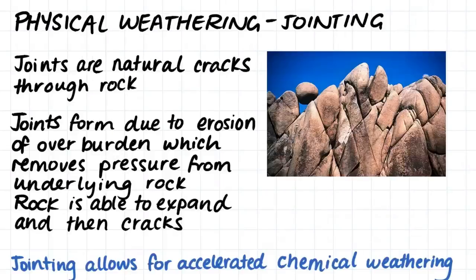The next type of physical weathering is jointing. Joints are natural cracks which occur through solid rock. These cracks form because initially all rock is deep in the crust under high temperature and pressure and covered by a lot of overburden. But this overburden is slowly removed and eroded away, and the rock rises up in the crust and the pressure upon the rock is removed. This removal of pressure from the underlying rock means the rock is able to expand, and this makes the rock fracture. Joints allow for accelerated chemical weathering as they open up the rock and provide more surface area for chemical weathering to occur.